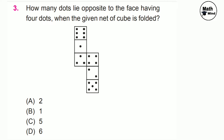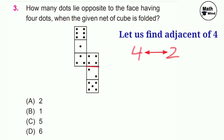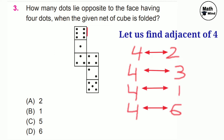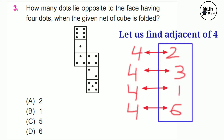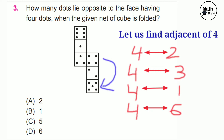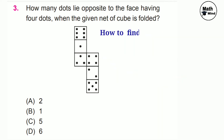Question number 3: how many dots lie opposite to the face having 4 dots when the given net of a cube is folded? We need to find the opposite of 4. To solve this, we find the adjacent faces of 4. There is a common line between 4 and 2, so 4 and 2 are adjacent. Similarly, 4 and 3 are adjacent. So 6, 1, 3, and 2 are all adjacent faces to 4.